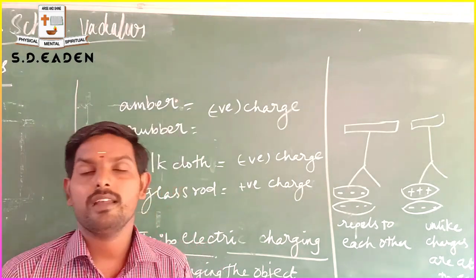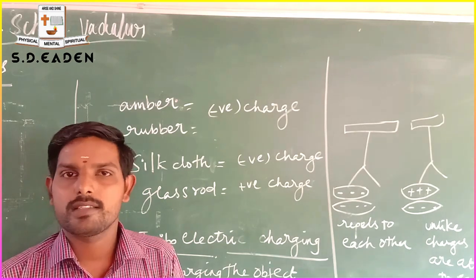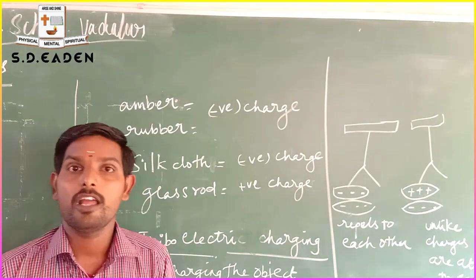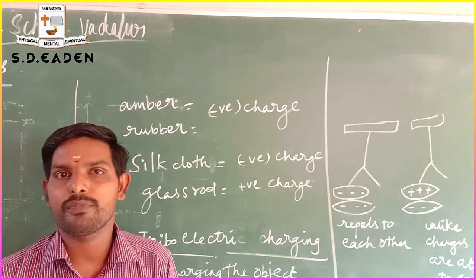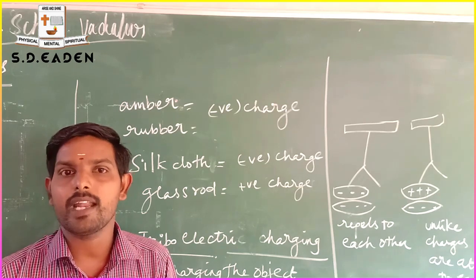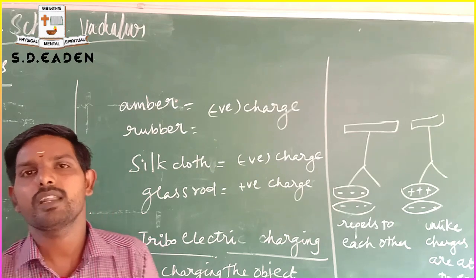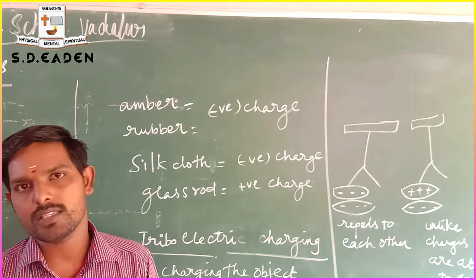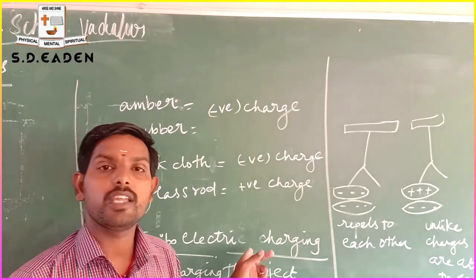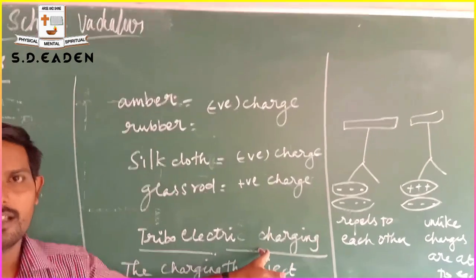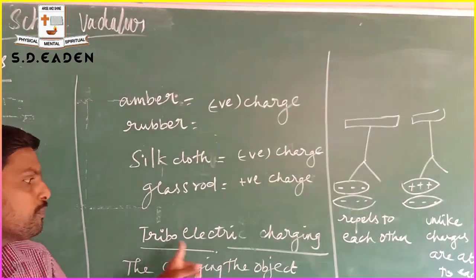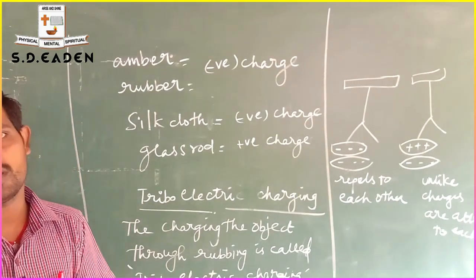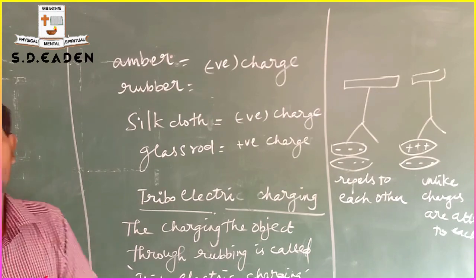J.J. Thomson and other scientists stated that material is made up of atoms. The atom is a neutral particle made up of protons, electrons, and neutrons. The proton is a positive charge, the electron is a negative charge, and the neutron is a neutral particle. A very important term is triboelectric charging — charging an object through rubbing is called triboelectric charging. This concludes the topic of historical background of electric charges.